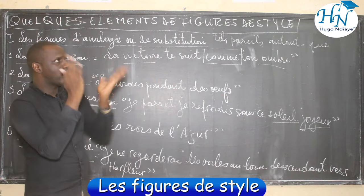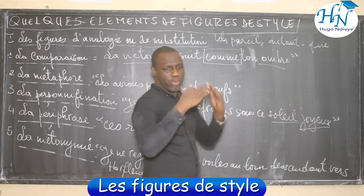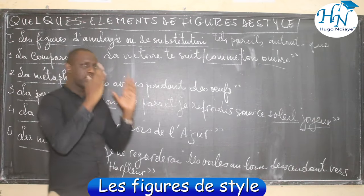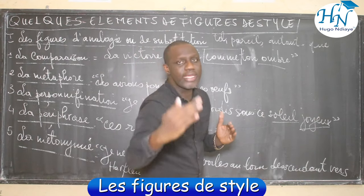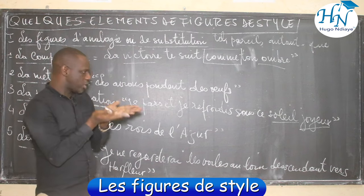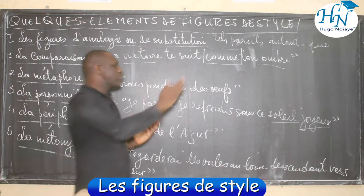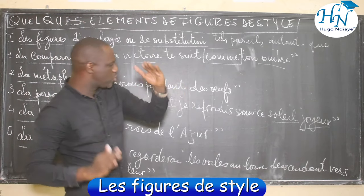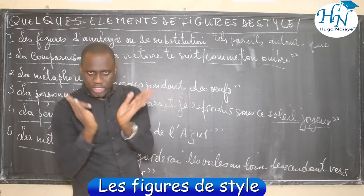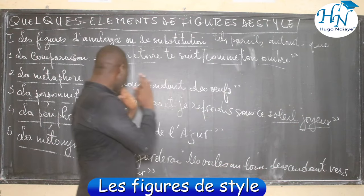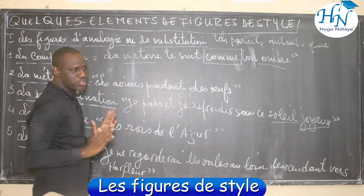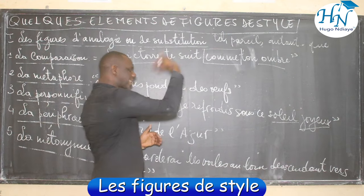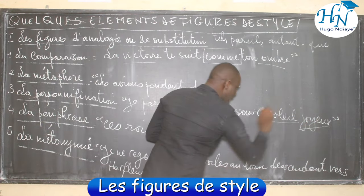On peut dire le soleil pleure, le tonnerre est en train de rire, les serpents sifflent, les arbres murmurent, le portable voyage. Si vous voyez que des caractéristiques de l'être humain sont attribuées à une chose ou bien à un animal, nous avons ce qu'on appelle la personnification. Cette figure consiste à attribuer les caractéristiques de l'être humain à un animal ou bien à une chose.